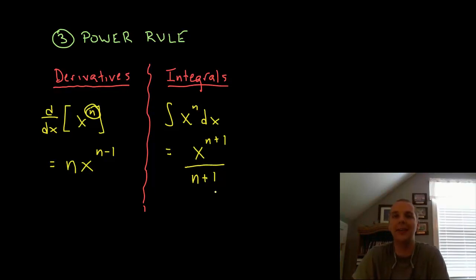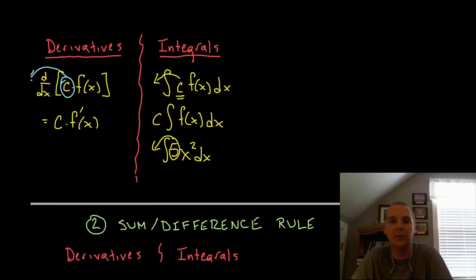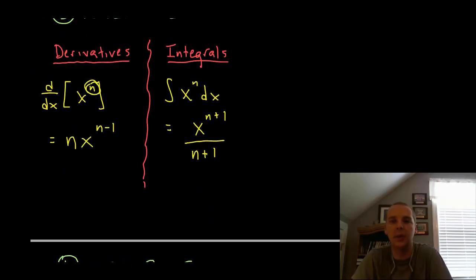So as an example the integral of x to the 4th would be x to the 5th over 5, and that over 5 takes care of the 5 that would be coming down if you tried to check your answer by differentiation. Now with all these I am leaving off the plus c so don't get on me too bad about these. This expression I actually took the integral so you could put a plus c here for the indefinite integral if you wanted to.